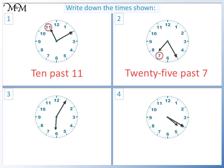Question 3. The minute hand is pointing to 1, so 5 past. The hour hand is just past 6, so the time is 5 past 6.